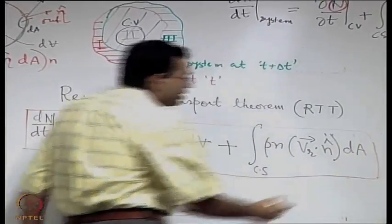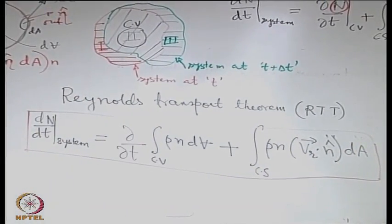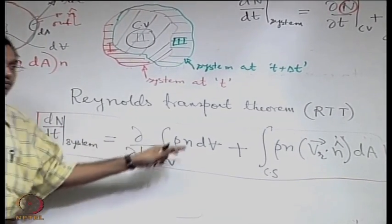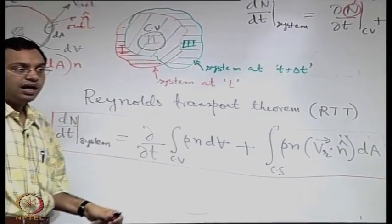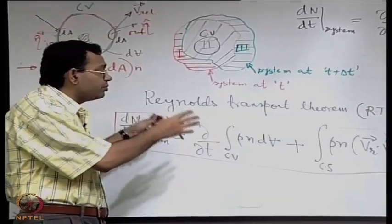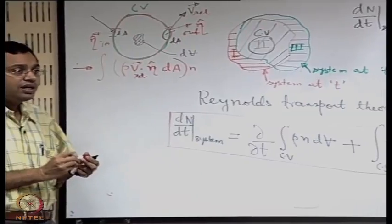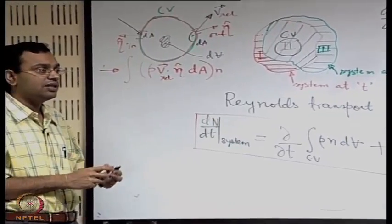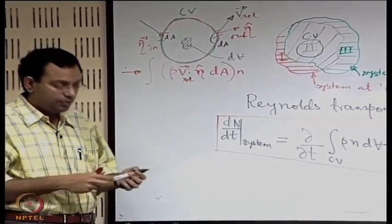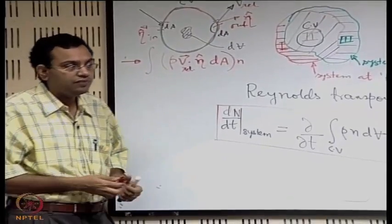The good thing about this theorem is its generality. Till now, we have never committed what this n is, and because we did not have to commit what n is, we may try to apply it for different cases with n parameterized in different ways, physically representing the different principles of conservation.